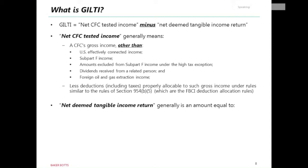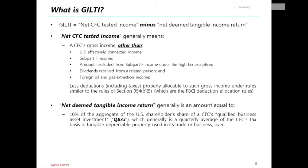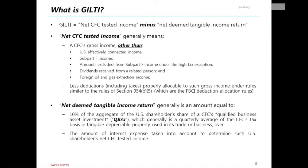The net deemed tangible income return is generally equal to 10% of the aggregate of the U.S. shareholder's share of the CFC's qualified business asset investment, or QBAI. QBAI is generally the quarterly average of the CFC's tax basis in tangible depreciable property used in its trade or business. The net deemed tangible income return also subtracts out interest expense taken into account by the U.S. shareholder in the net tested income component.